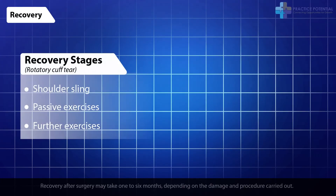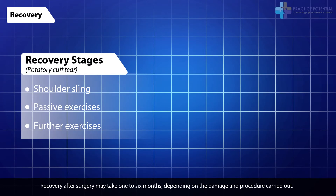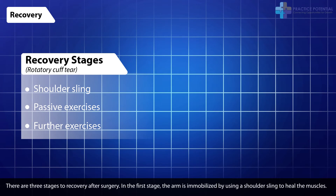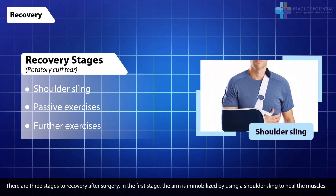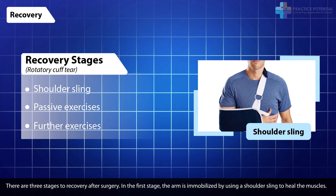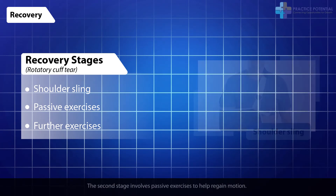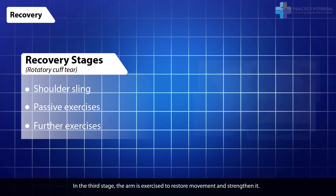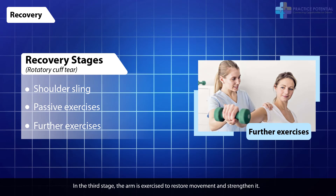Recovery. Recovery after surgery may take 1 to 6 months, depending on the damage and procedure carried out. There are three stages to recovery after surgery. In the first stage, the arm is immobilized by using a shoulder sling to heal the muscles. The second stage involves passive exercises to help regain motion. In the third stage, the arm is exercised to restore movement and strengthen it. The recovery process may be slow, but a patient must remain committed to recovering fully.